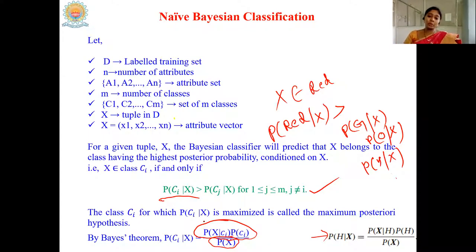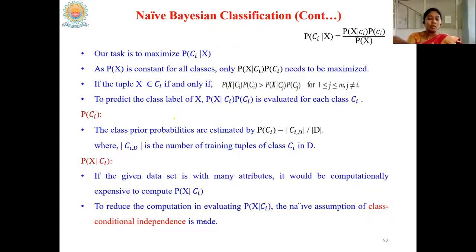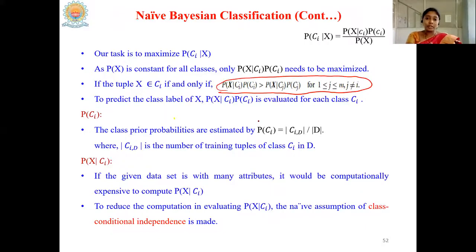The numerator is: the likelihood of the tuple given the class, multiplied by the prior probability of the class. All terminologies were discussed in the previous class. Our task is simplified to finding P(X|Ci) × P(Ci), and we need to prove that this value for a particular class Ci is higher than that for all other classes.